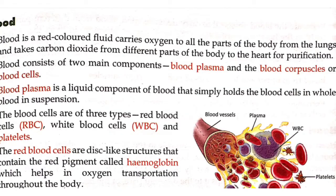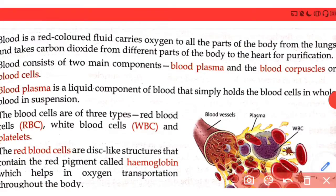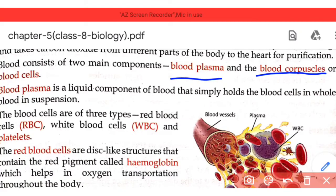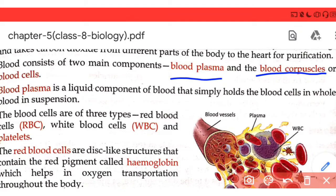Blood consists of two main components: blood plasma and blood corpuscles. Blood plasma is the liquid component that keeps the blood cells mixed within it — like water dissolving sugar, plasma is a liquid that binds the blood corpuscles and holds them together. Blood corpuscles are of three types: red blood cells (RBC), white blood cells (WBC), and platelets.